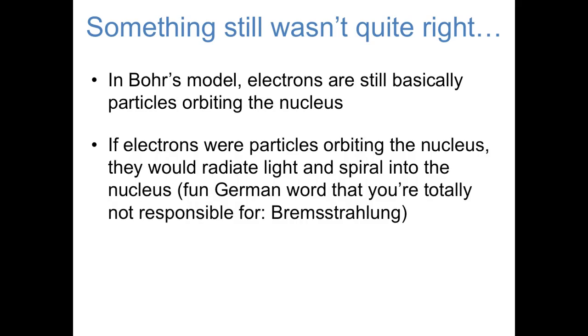Also, and this isn't very important for you to understand, there was a classical prediction at the time that if electrons were particles orbiting the nucleus, they would radiate light and in a very short time spiral into the nucleus. There's a big German word associated with this, bremsstrahlung, which translates to something like breaking radiation. So in any case, this was another sign that something wasn't quite right about the idea that electrons were just particles orbiting the nucleus.